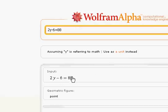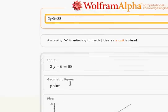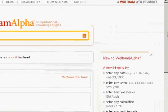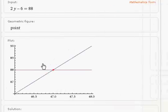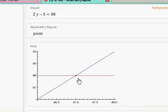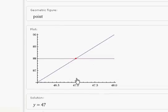There is the input. The geometric figure is a point. The plot, there is the answer right there. 47.